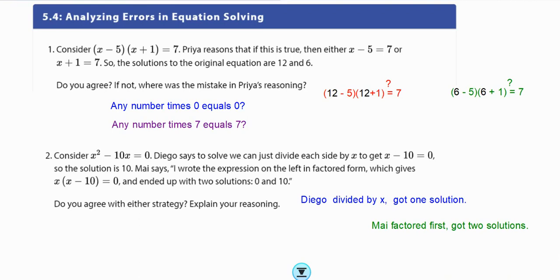Consider x squared minus 10x equals zero. Diego says, to solve, we can just divide each side by x to get x minus 10 equals zero. So, the solution is 10. Diego divided by x and got one solution, x equals 10. Now, Maya says, I wrote the expression on the left in factored form, which gives x(x - 10) = 0, and ended up with two solutions, zero and 10. So, Maya factored first and got two solutions, x equals zero, x equals 10. Do you agree with either strategy? And explain your reasoning. So, think about that for a second.